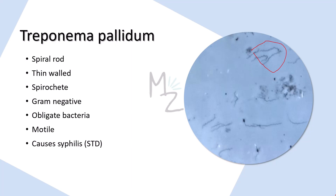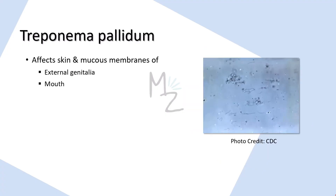Treponema pallidum is an obligate bacterium because it cannot live outside certain environments, like human beings. It is responsible for causing syphilis, which is a sexually transmitted disease. Treponema pallidum affects the skin and mucous membranes of the external genitalia, and also the mouth.